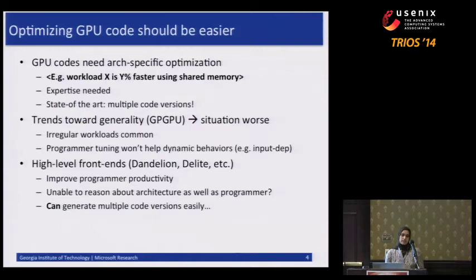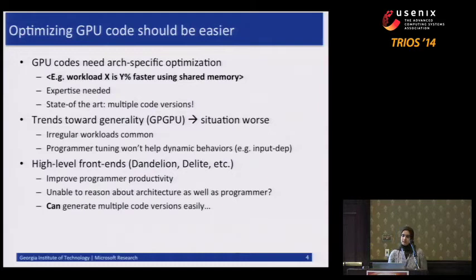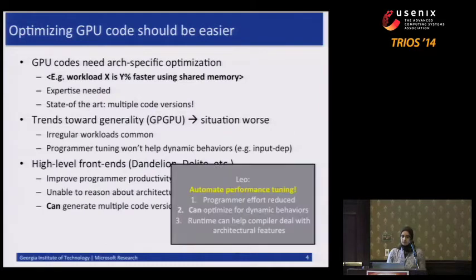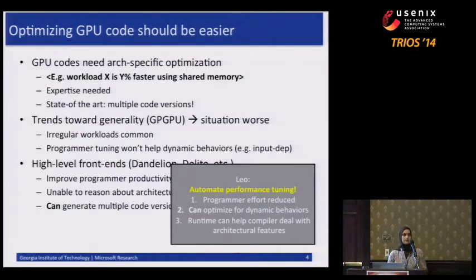The nice thing, though, is that because it's a high-level front-end, it does generate GPU code on the fly. This makes it easier for a runtime to perform optimizations dynamically. That's really what this work is — we call it Leo. It's an automated performance framework for GPUs where we integrate an instrumentation framework with a high-level front-end to provide a runtime that can do optimizations on the fly and reduce the amount of manual tuning that programmers have to do.